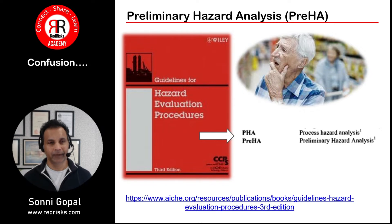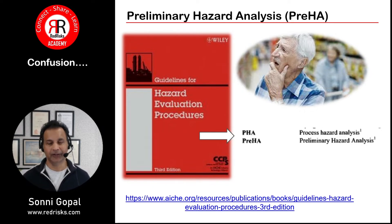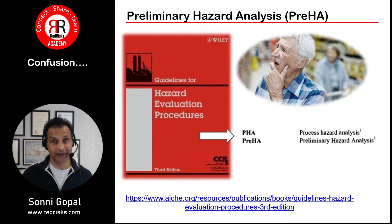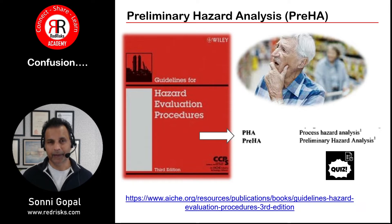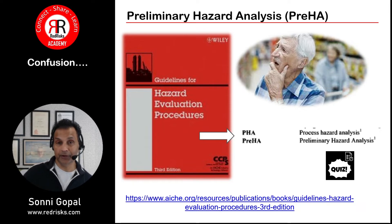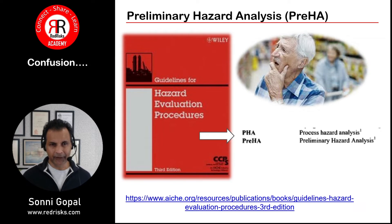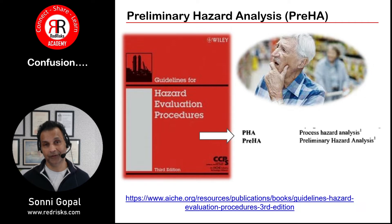When you look at the CCPS guideline, they actually have a section where they talk about PHAs and Pre-HAs. PHA is the Process Hazard Analysis — most of you are very familiar with that. The Pre-HA is the Preliminary Hazard Analysis. There is a link to this document — it's on the slide, and I'll also put it in the descriptions of the video on the YouTube channel and also on our website.